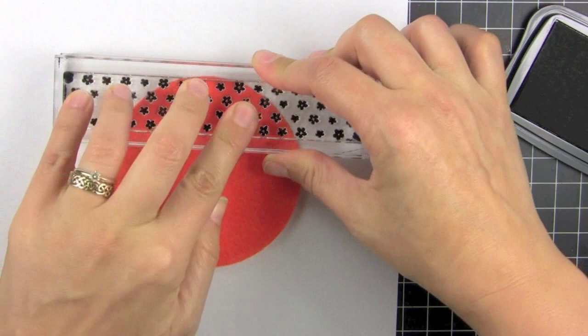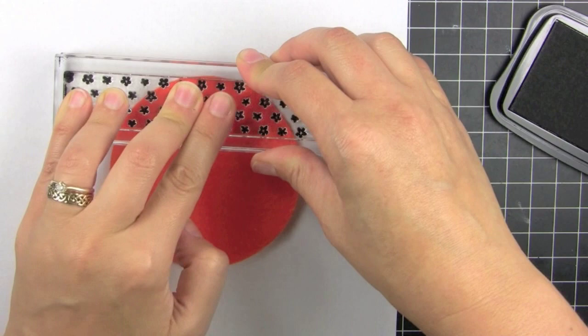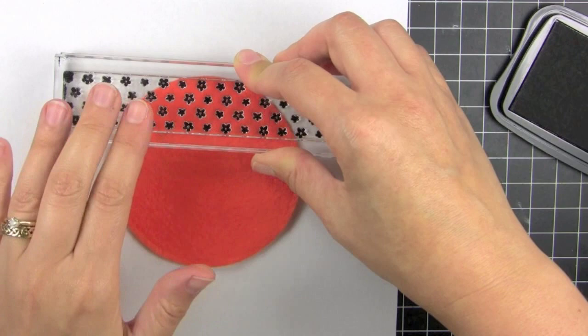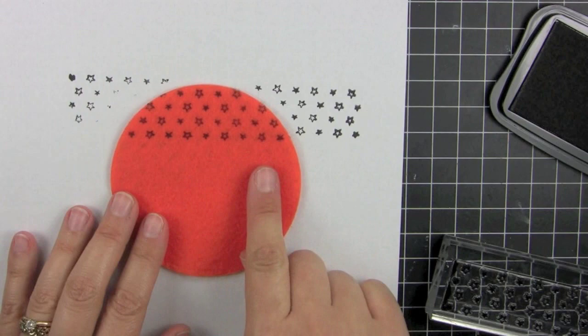I'm using Stayz On black ink to stamp on an orange circle of felt that I die cut. When I stamp on felt I like to stamp on it and press for about 10 to 15 seconds so that the ink really has a chance to transfer onto the felt.